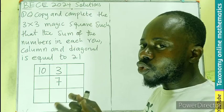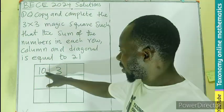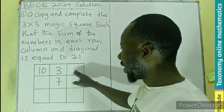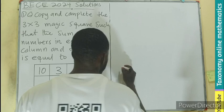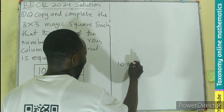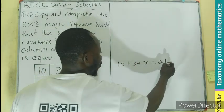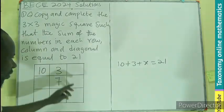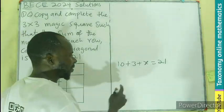So 1, 2, 3 to give us 21, meaning if you have 10 plus 3 plus a certain number should be giving you 21. If I'm putting here x, that means 13 plus a equals 21.